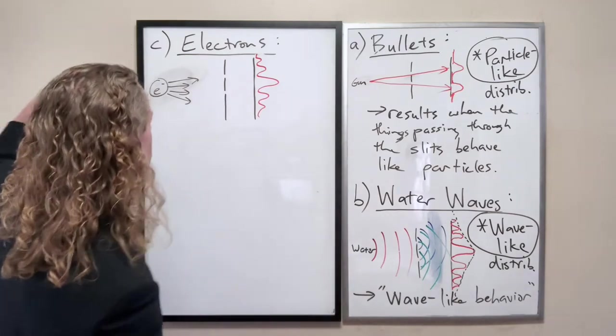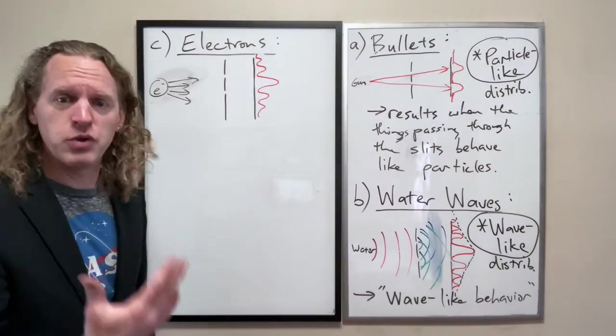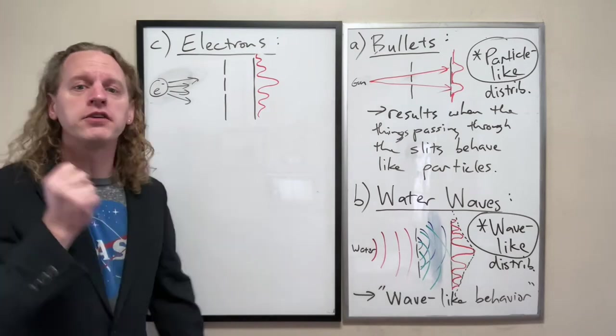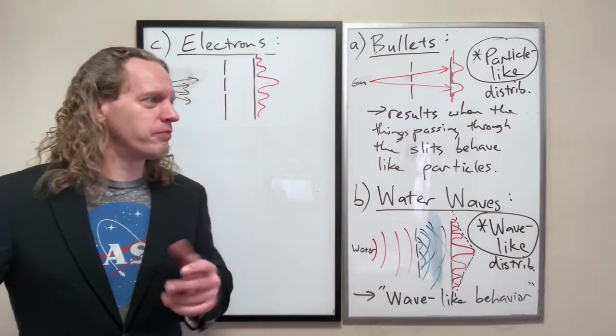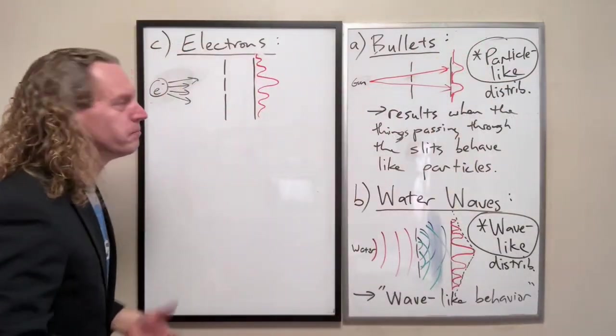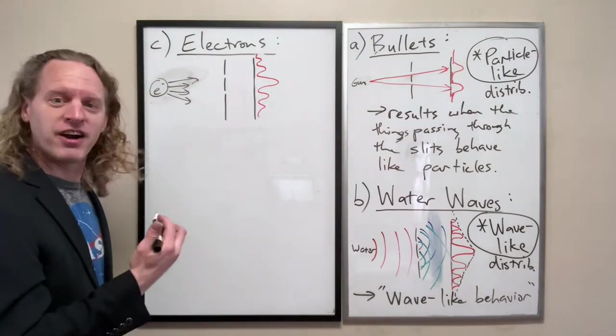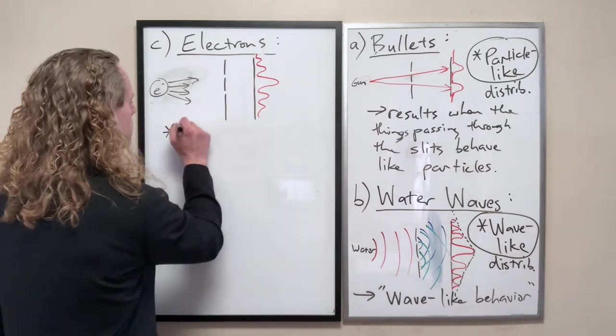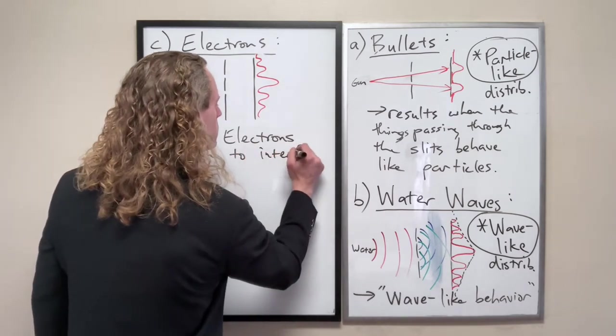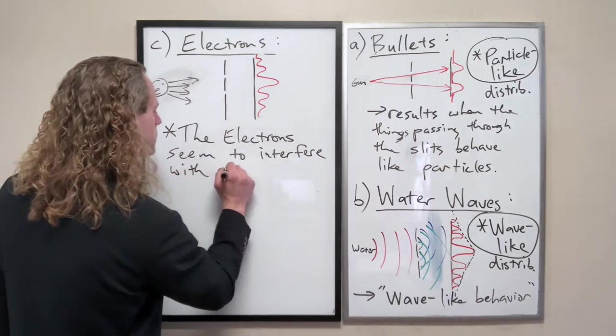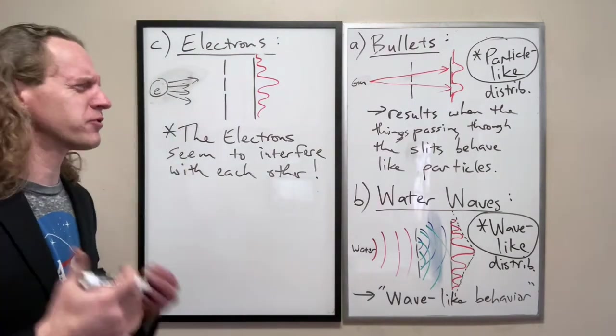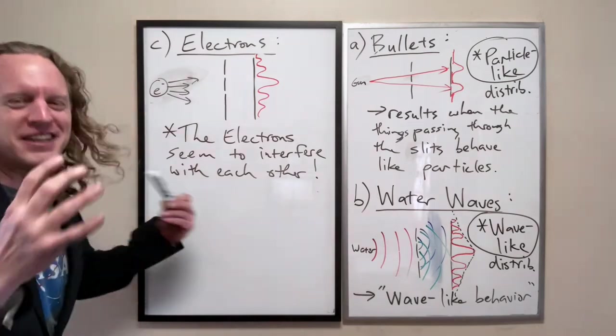For whatever reason, the electrons that are going through the top slit seem to interfere with the electrons that are going through the bottom slit. And there is zero classical interpretation of this. There is no way that I should be able to throw a billiard ball that direction and a billiard ball that direction and have them interact on the other side of a wall. But that's exactly what happens here. So the electrons seem to interfere with each other. And this is our first hint that something's really effed up about the universe. This should not happen.